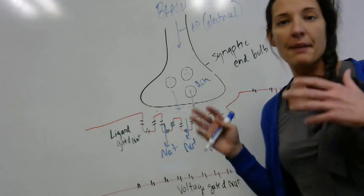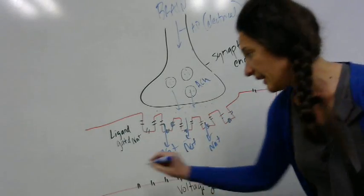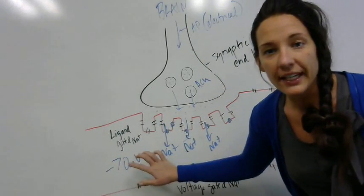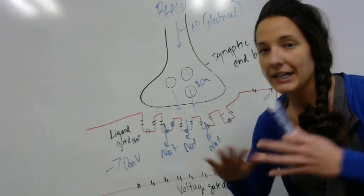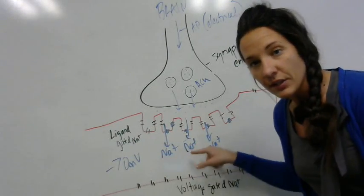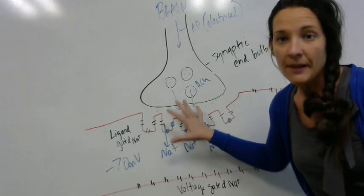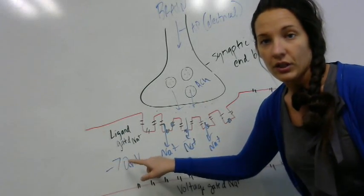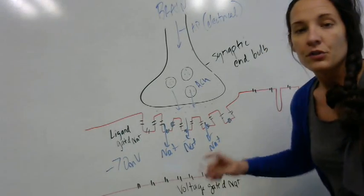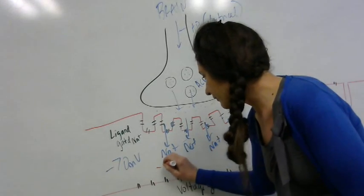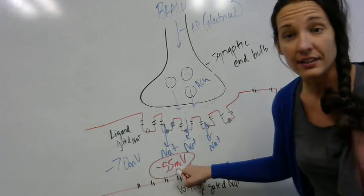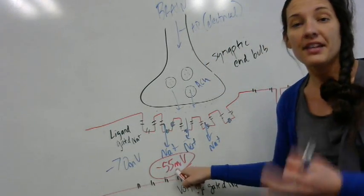Before I talk about what happens at this point, we have to recognize that at rest our cell is negative 70 millivolts. This negative 70 millivolts is your happy place. Once I begin to rush in all of this sodium from these ligand-gated channels, that increases my potential to about negative 55. Once I reach this negative 55 millivolts, that is a threshold value, a special voltage.